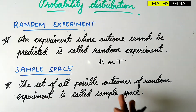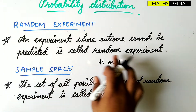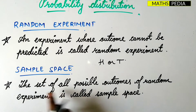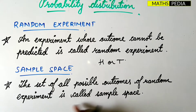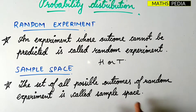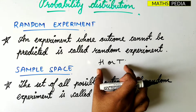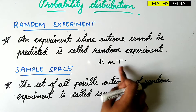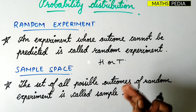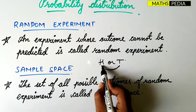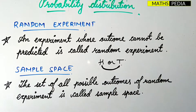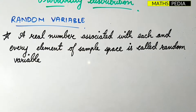The second point is sample space. The set of all possible outcomes of a random experiment is called the sample space. As discussed, tossing a coin gives two possible outcomes. When you toss one coin, the only possible outcomes are head or tail, and this set of outcomes is nothing but the sample space.